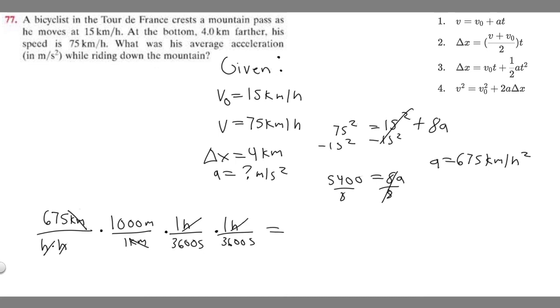This hour will cancel, and now we'll have meters on top, and then second times second, which is just second squared. So you're going to take your 675, multiply by 1,000, 675,000. And then multiply by 1 over 3,600 times 1 over 3,600. And if you do that, you should get 0.052083 and so on. I'm just going to round to this decimal place here. So 0.052.